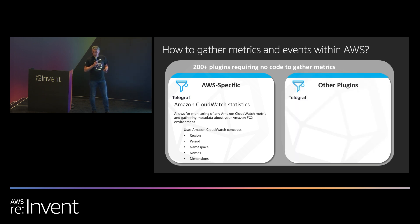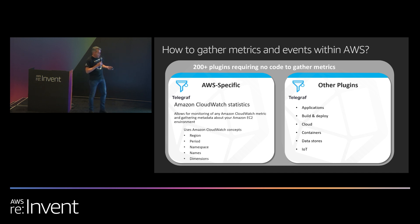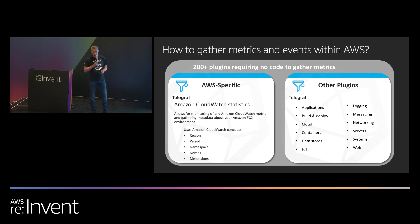Secondarily, there's a ton of other plugins, and you can use them generically within the AWS environment to gather information and metrics from applications, your build and deploy systems, the cloud environment itself, other containers, data stores, IoT, logging, messaging, networking — all of these things will work within the AWS environment. And you can combine that with anything you want out of CloudWatch to provide that contextual metadata and tie those pieces of information together.